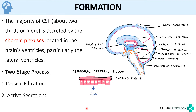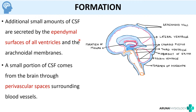The formation of CSF is a two-step process including passive filtration and active secretion, which is why the composition of CSF is different from that of blood. The choroid plexus produces two-thirds of the CSF; the remaining one-third comes from the ependymal surfaces of all ventricles and also from the perivascular spaces surrounding the blood vessels.